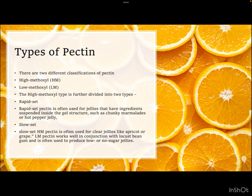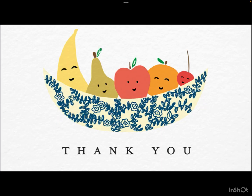Classifying pectin, we have two types: high methoxyl pectin and low methoxyl pectin. High methoxyl pectin is further divided into rapid set and slow set. Rapid set pectin is often used for jellies that have ingredients suspended inside the gel structure, such as chunky marmalades or hot pepper jelly. Slow set high methoxyl pectin is often used for clear jellies such as those made from apricot or grape. Low methoxyl pectin works well in conjunction with locust bean gum and is often used to produce low or no sugar jellies. This illustrates how well the chemical structure of pectin plays a role in gelling.